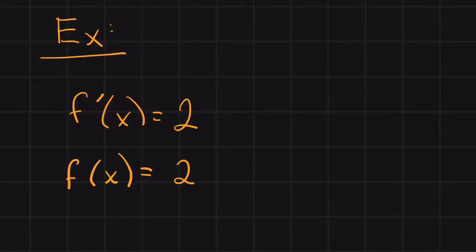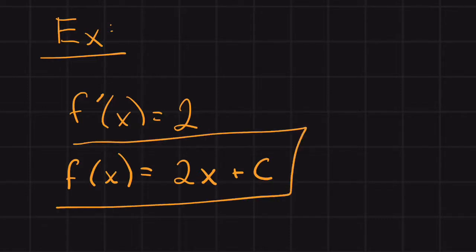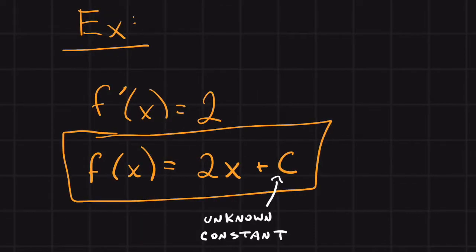We know that this 2 is going to be a part of our answer. The only way to end up with a constant when you take a derivative is if you had an x multiplied with that constant for f(x). Now that we've found the antiderivative of 2, we can add a term C to complete our answer. That value of C is the placeholder for the unknown constant.